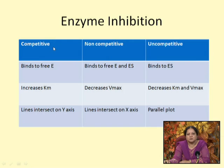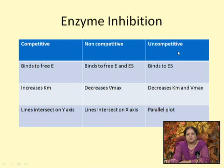Reversible inhibitors bind to the enzyme to form an EI complex, which can dissociate back to free E plus I. The equilibrium constant governing inhibitor binding is Ki. A competitive inhibitor binds only to the free enzyme — if substrate is already bound, it cannot bind — because they share the same binding site. A competitive inhibitor is a substrate analog that binds at the active site and excludes the substrate.